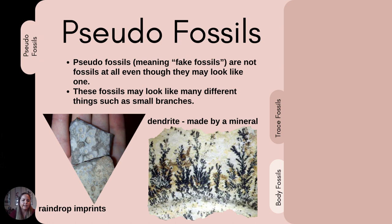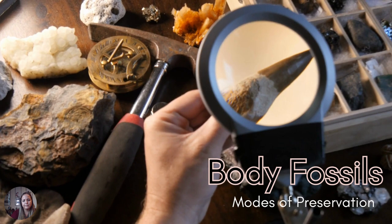We also have pseudofossils, which are technically fake fossils — they are not real. They may look like fossils, but they are not. On the left we have raindrop imprints, and on the right we have something called a dendrite, which is actually made by a mineral process and is not actually a fossil, although a lot of people think they are.